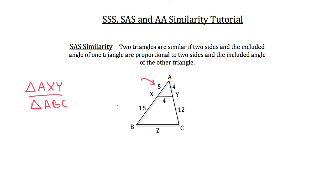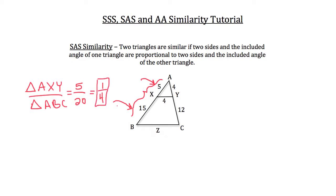Side AX of triangle AXY corresponds to the full side length of triangle ABC. The entire side length of triangle AXY measures 5, and the full side AB of triangle ABC — which is 15 plus 5 — measures 20. This reduces the proportion down to 1 over 4. Since these two triangles are similar, that proportion holds true for all three sides of both triangles. Now we can compare side BC of triangle ABC to its corresponding side in triangle AXY, which has a length of 4.